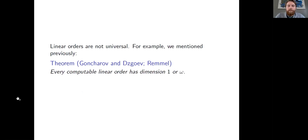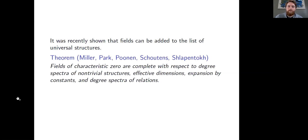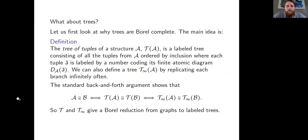Linear orders are not universal in the sense of completeness for computable dimension — any computable linear order has either dimension one or omega, so linear orders can't have dimension two. What about fields? Fields were recently added to the list of universal things — a theorem of Miller, Park, and Schoutens showed that fields of characteristic zero are complete. So we can add those to the list. That leaves trees: are trees universal?